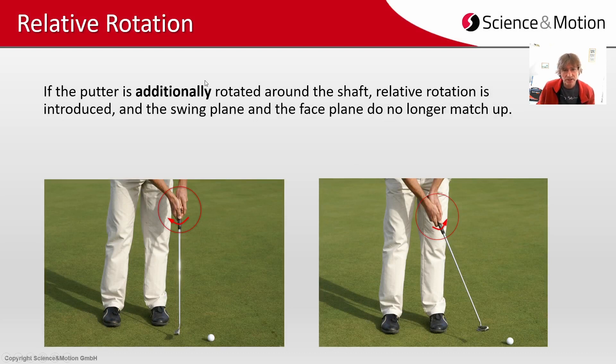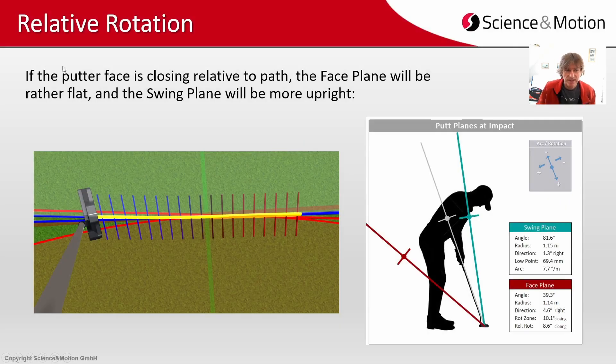But the putter can also be additionally rotated around the shaft creating more or less rotation. Now if relative rotation is introduced then the swing plane and the face plane will no longer match up. In this case we see that the putter face is closing relative to path. So path is still straight but the face plane is opening and significantly closing. And as a consequence the face plane will be rather flat at 39 degrees and the swing plane for the path will be still very much upright with 81 degrees.